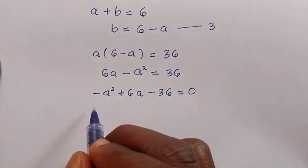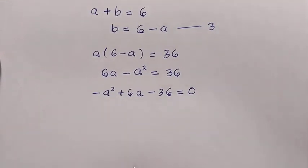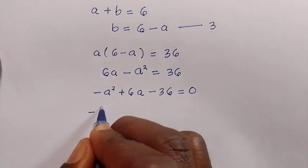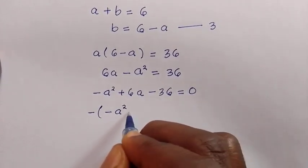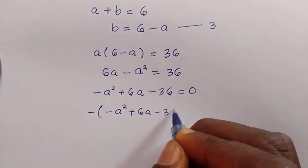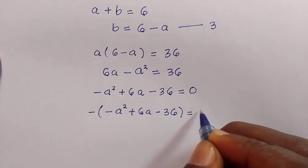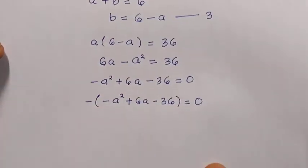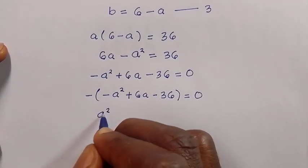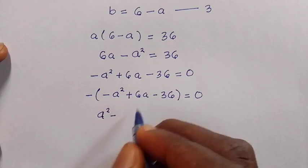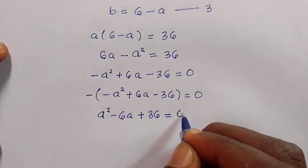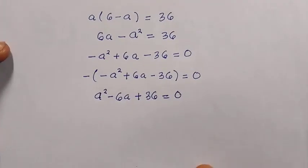We don't want a negative leading term, so we multiply through by negative one. We have negative times (minus a squared plus 6a minus 36) equals zero. Next, minus times minus gives plus a squared, minus 6a, plus 36, all equals zero.